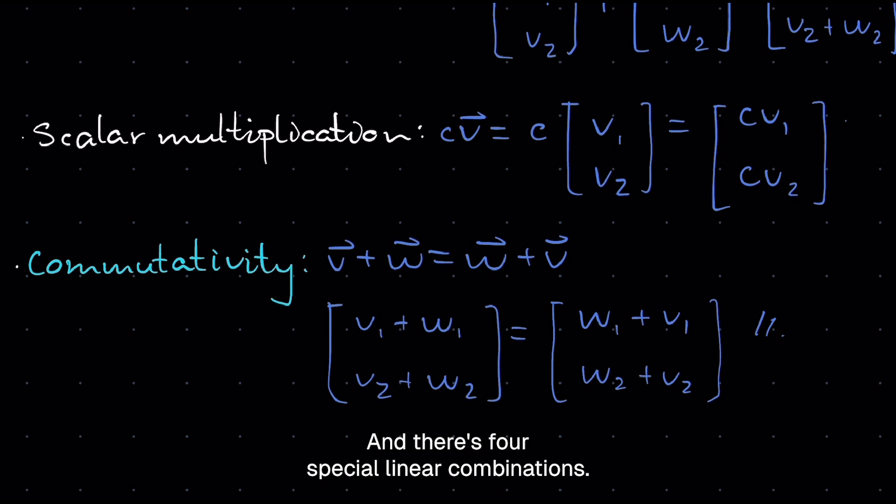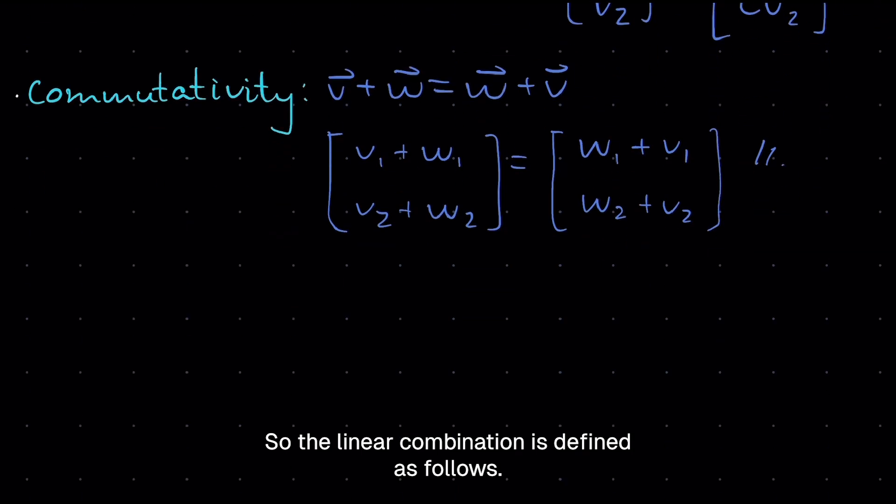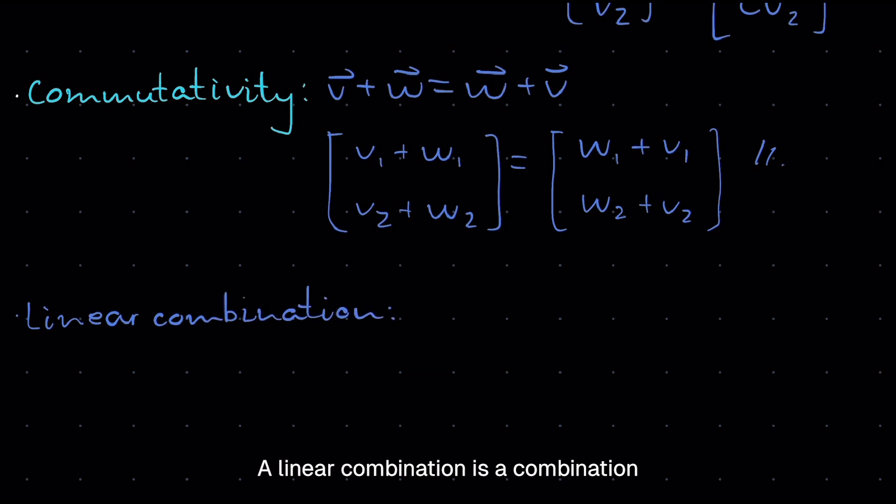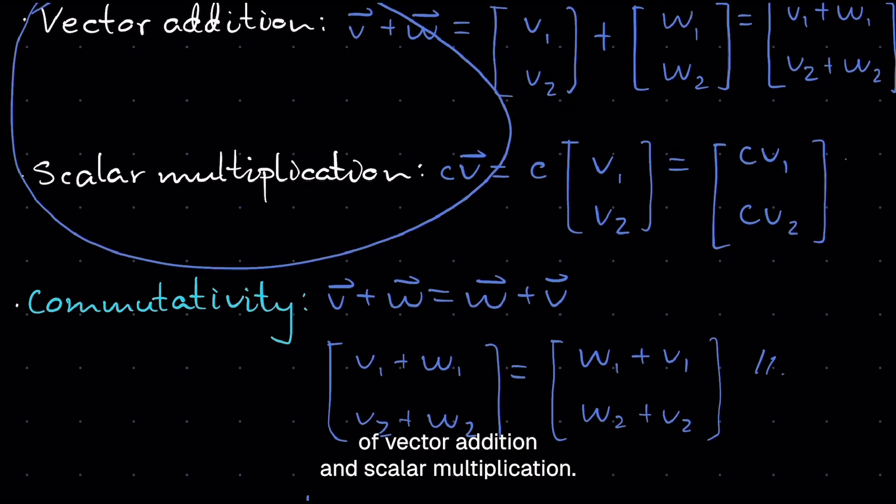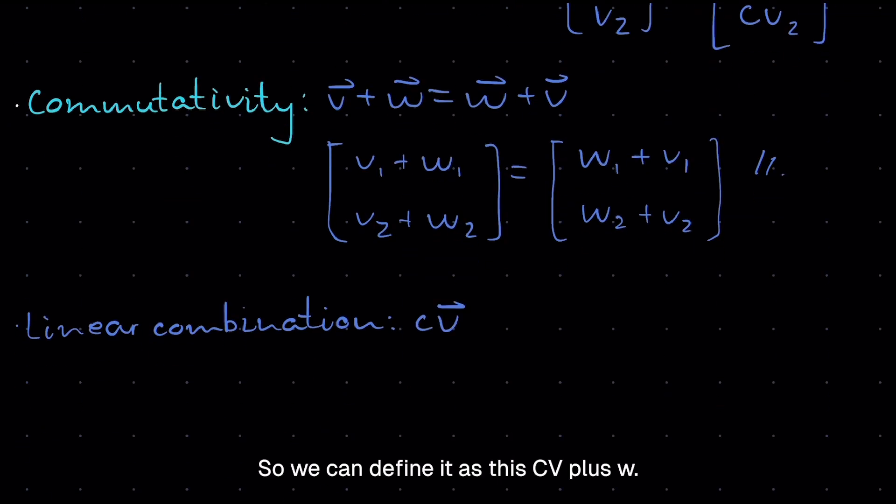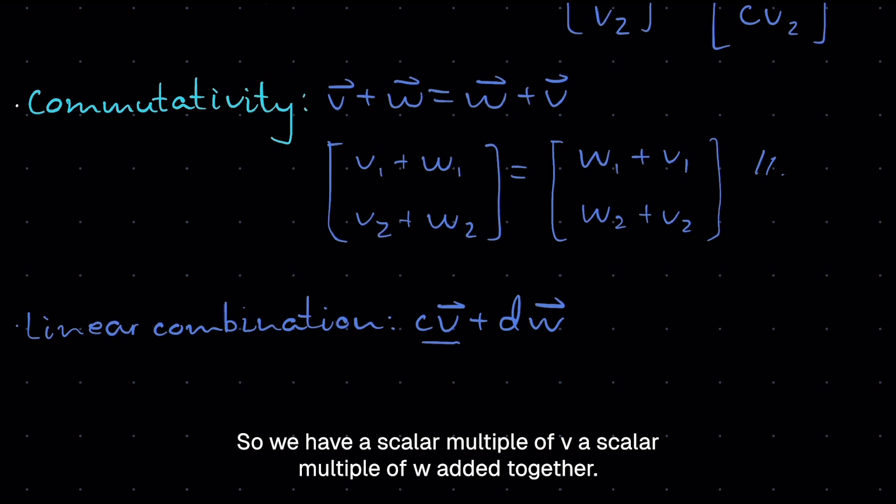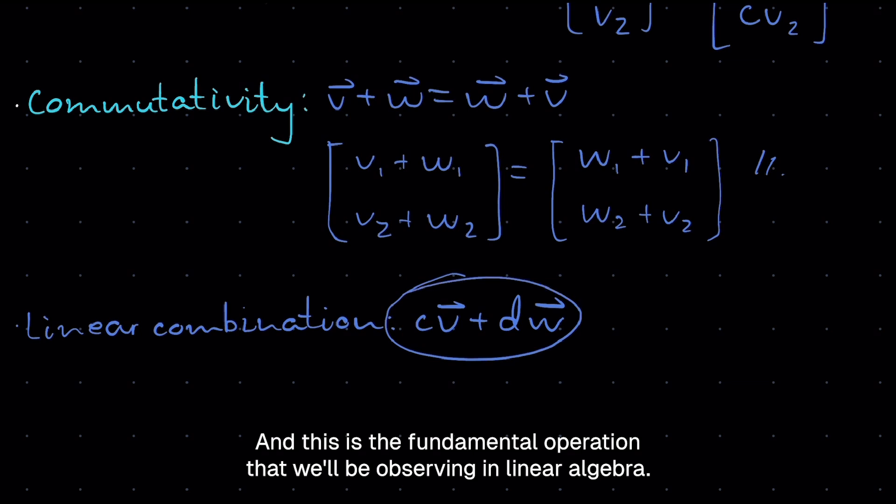And there's four special linear combinations we have to first talk about. So what is a linear combination? A linear combination is a combination of vector addition and scalar multiplication. So we can define it as this: CV plus DW. So we have a scalar multiple of V, a scalar multiple of W added together. So it's basically multiplication and addition combined together. And this is the fundamental operation that we'll be observing in linear algebra.